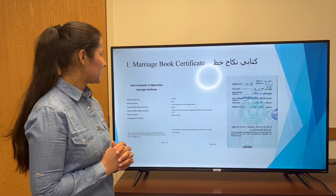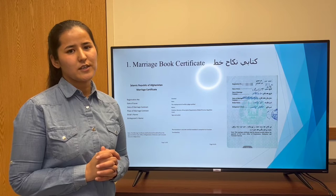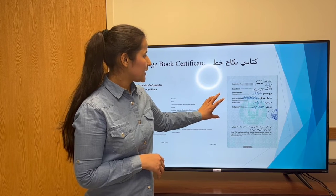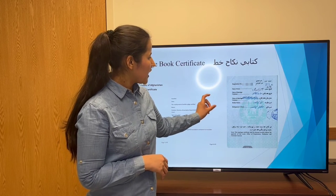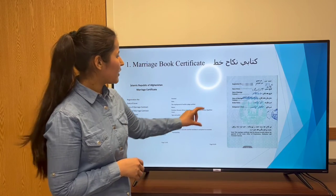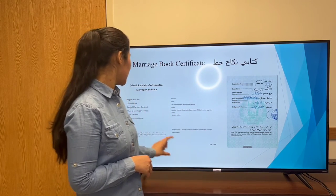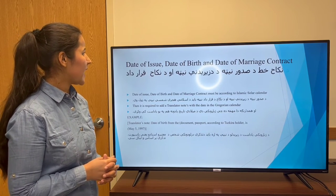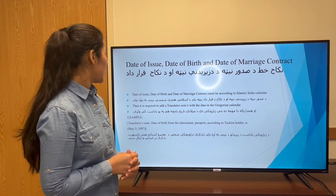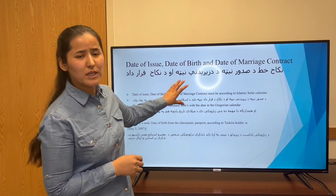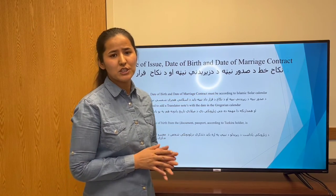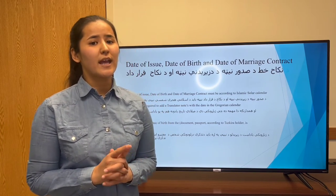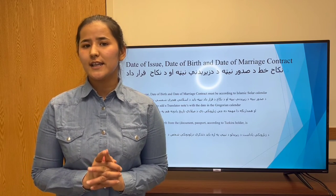The marriage book certificate has several pages and starts from the basic information: registration number, date of issue, and date of marriage contract. The date of issue, date of birth, and date of marriage contract should be mentioned in the Islamic Solar calendar, but the translator can also add or convert these to the Gregorian calendar.